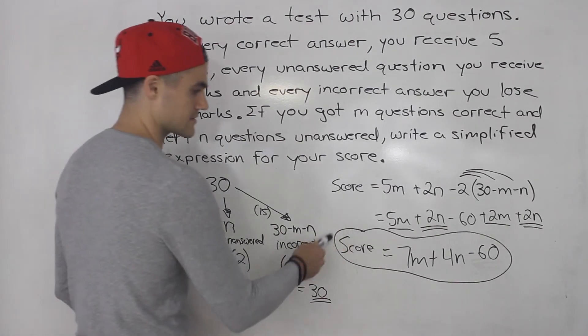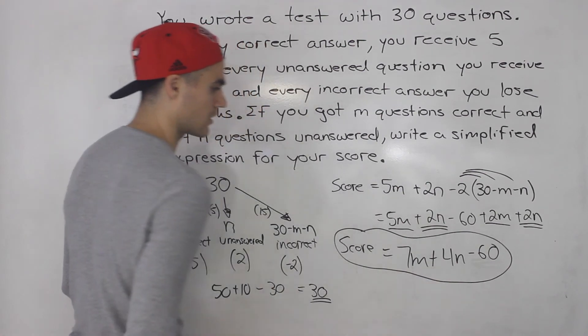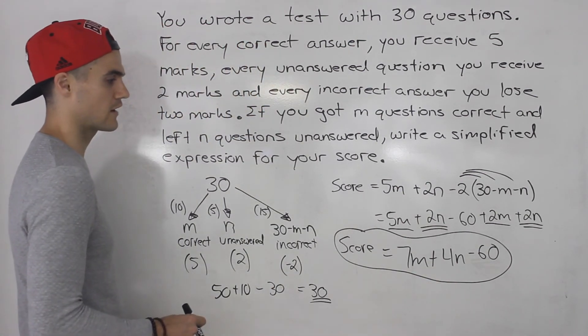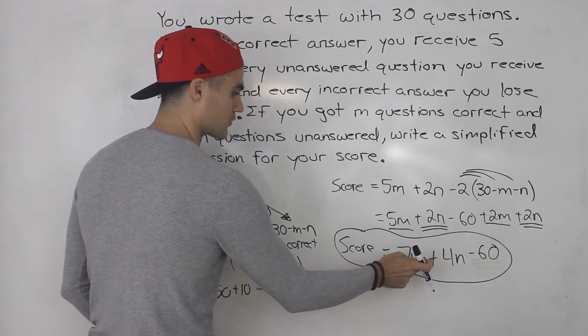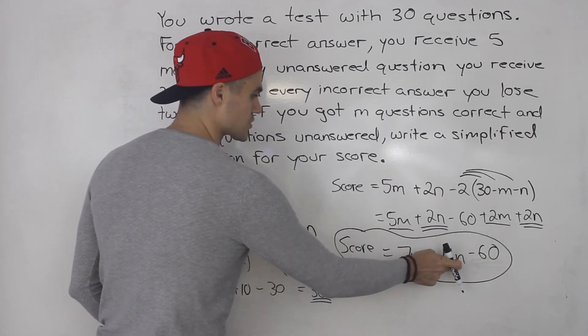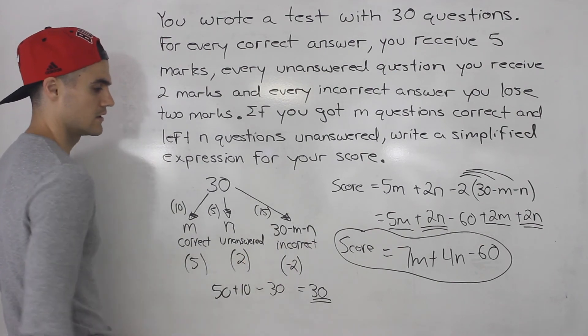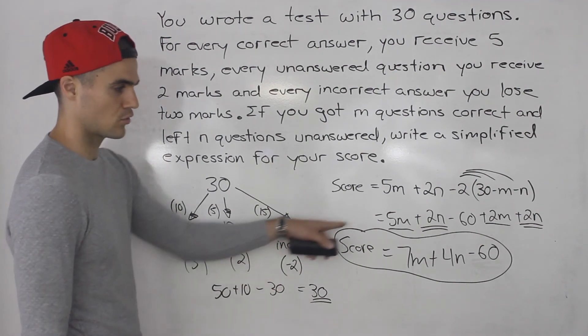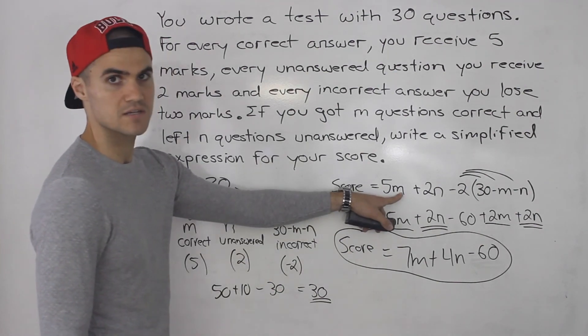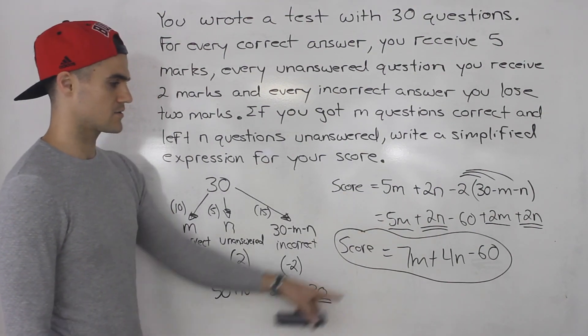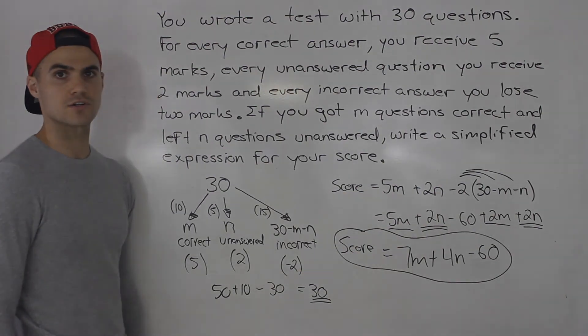So this formula always works. That always gives you your final score. And it's only based on the number of correct questions and unanswered questions that you got. You don't have to worry about the incorrect number of questions because the formula takes care of it for you because we simplified it. So that there is your final answer to this question.